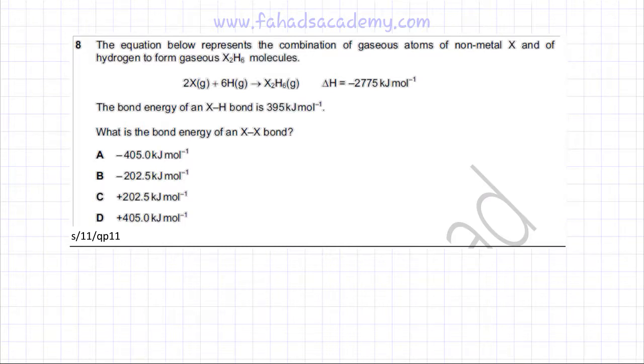Now if you take this reaction carefully, you are going to notice that there are two X atoms, gaseous X atoms, and they are not bonded to each other. And there are six hydrogen gaseous atoms and they are also not bonded to each other, and they are forming a molecule of X₂H₆.